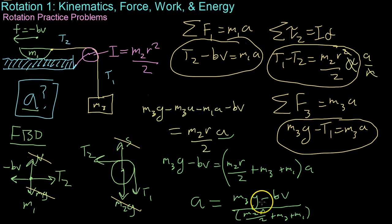Oh wait, that's not right. There shouldn't be an R in the answer. Let's see. Yes, in the torques, I forgot to add in a multiply by the radial distance. And that cancels out this extra R. And then when you go through all the extra steps, obviously, that R cancels out. And so, you end up with the actual answer is a equals M3 G minus BV over M2 over 2 plus M3 plus M1.